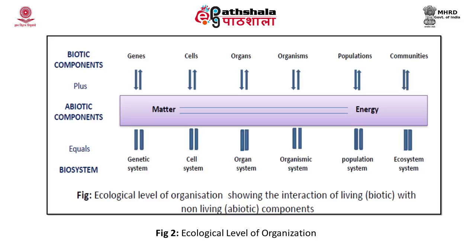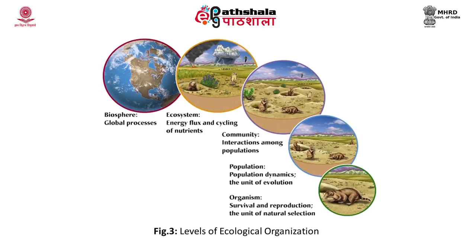For example, a gene (the biotic component) plus abiotic components (matter and energy) forms the biosystem called the genetic system. Figure 3 shows the levels of ecological organization where organisms combine to form a population; many populations living in a place form a community; a community stays in an ecosystem; and the ecosystem of the whole world is called the biosphere.